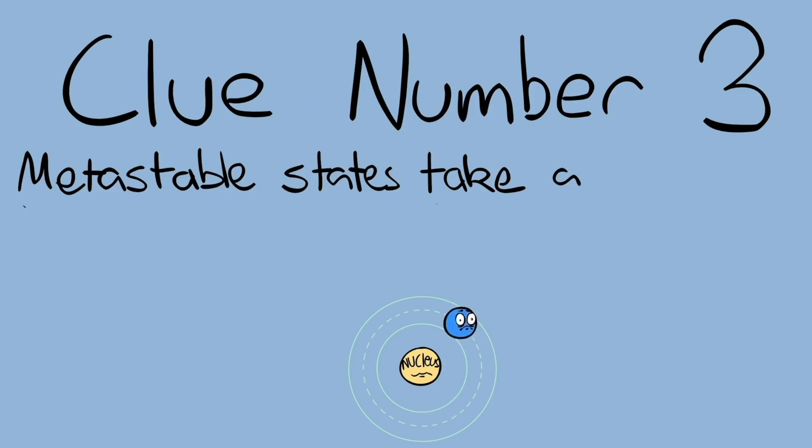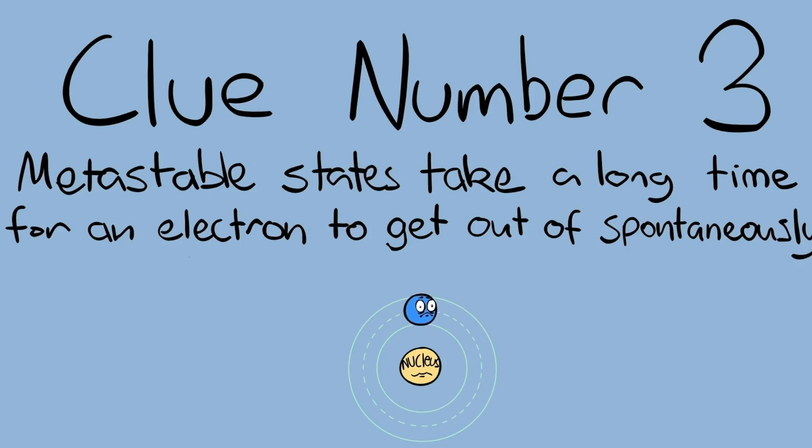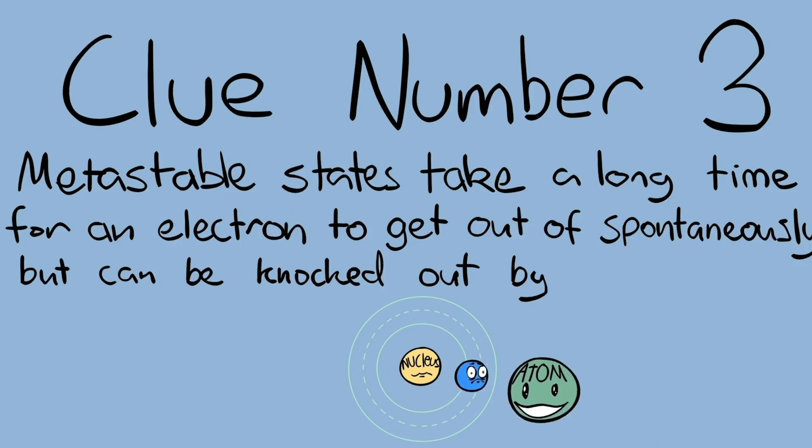So that's our third clue. Metastable states take a long time for an electron to get out of spontaneously, but can be knocked out by a collision.